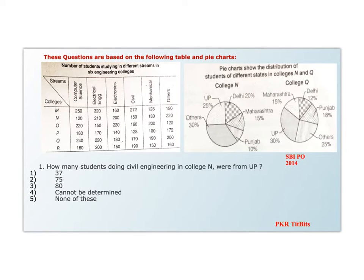These questions are based on the following table and pie charts. The table shows the number of students studying in different streams in six engineering colleges M to R. The streams are Computer Science, Electrical Engineering, Electronics, Civil, Mechanical, and Others. The pie charts show the distribution of students from different states in colleges N and Q, given as percentage-wise distribution.